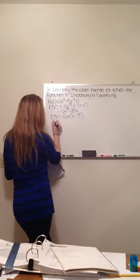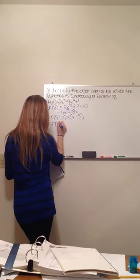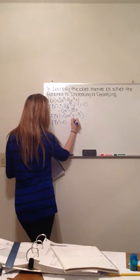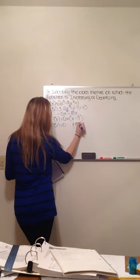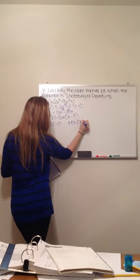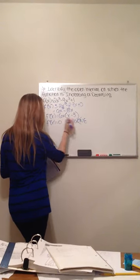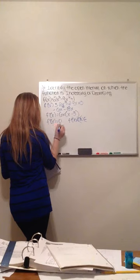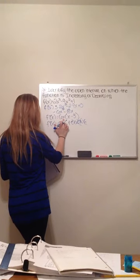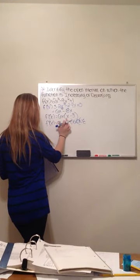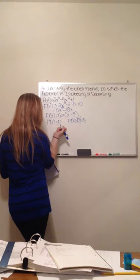Then you want to find out when the derivative of the function equals 0 or when the derivative does not exist. It's a polynomial, so it exists everywhere. We want to find when it's 0. It will equal 0 when x is 0 or when x is 3.